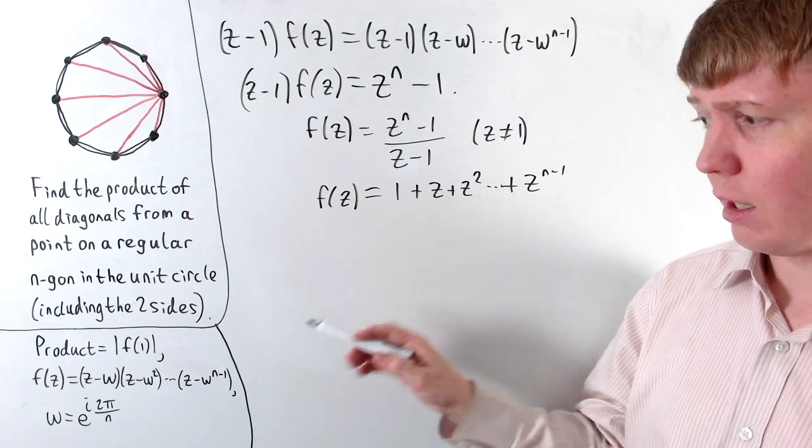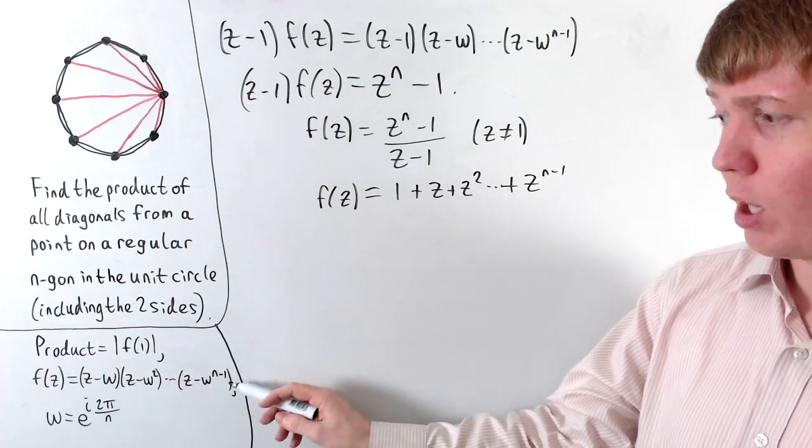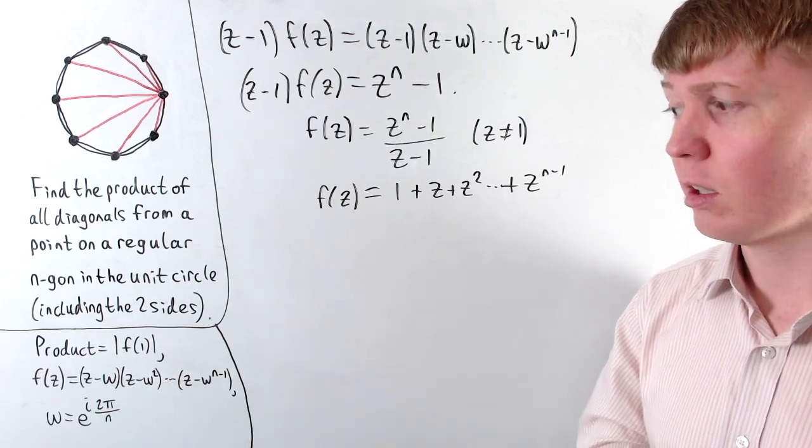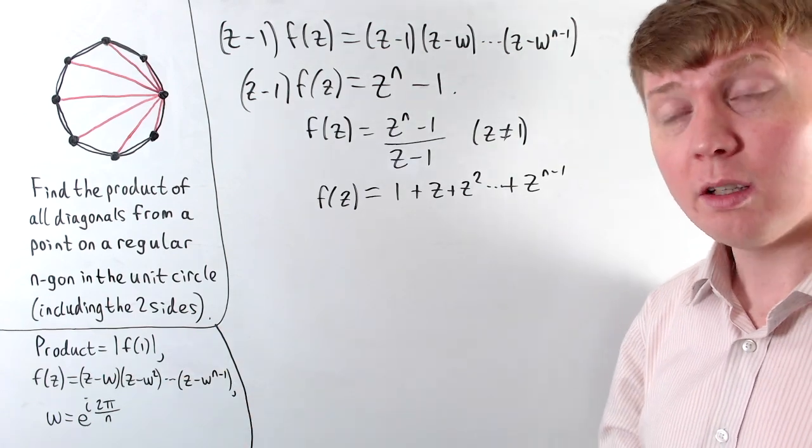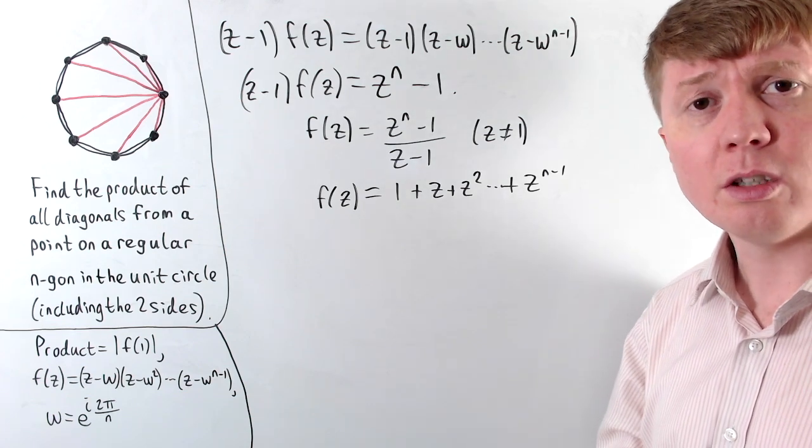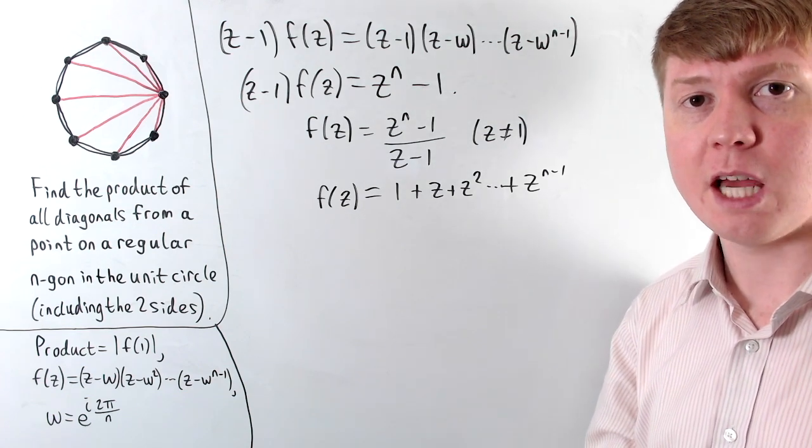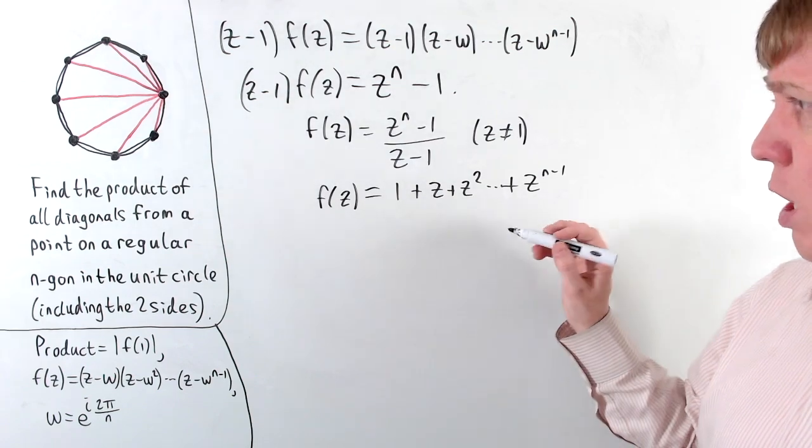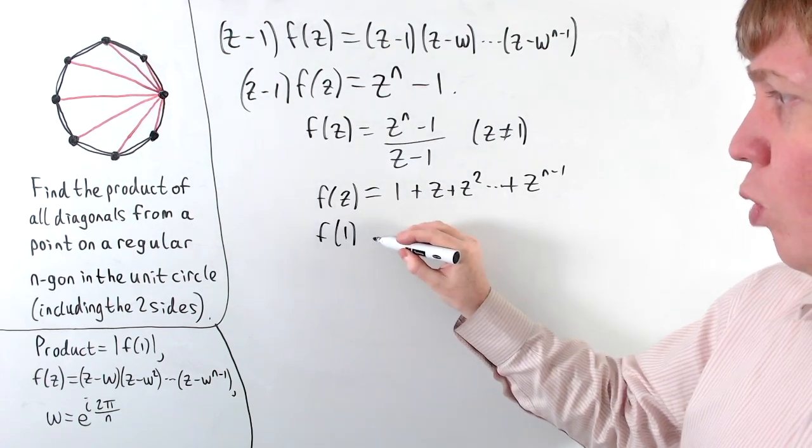So it's quite a nice way of seeing this without having to expand all of these brackets and deal with the cancellation, where we could expand all of these brackets and show that f of z takes this form. This is quite a neat shortcut we can use by considering the roots of f of z. So then we get this expression, which is valid even when z is 1.